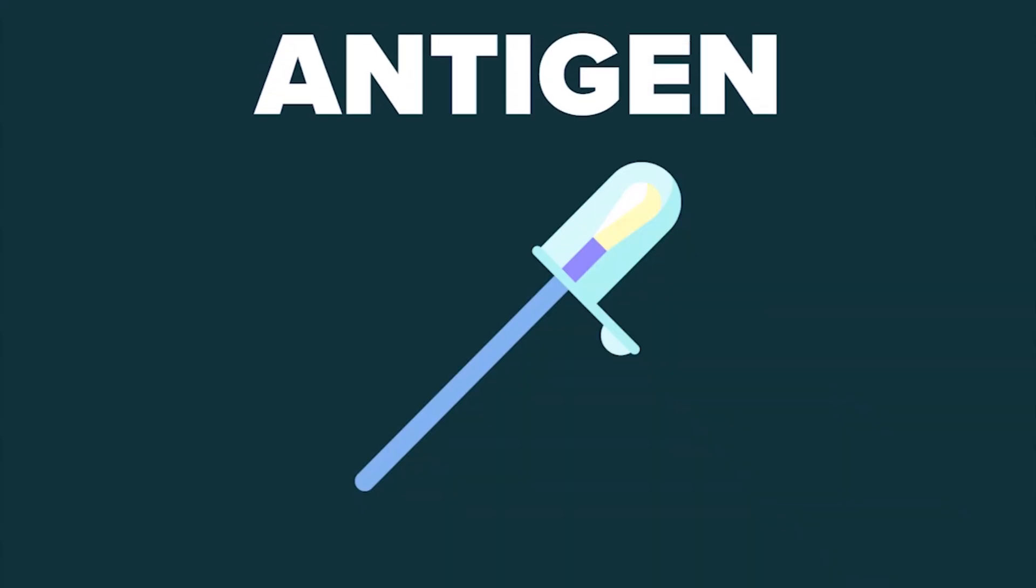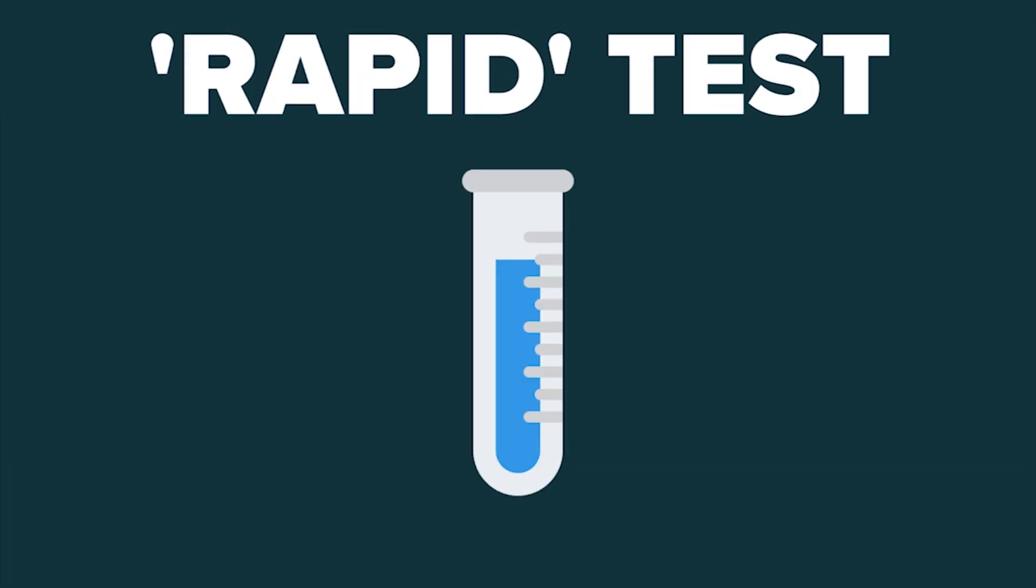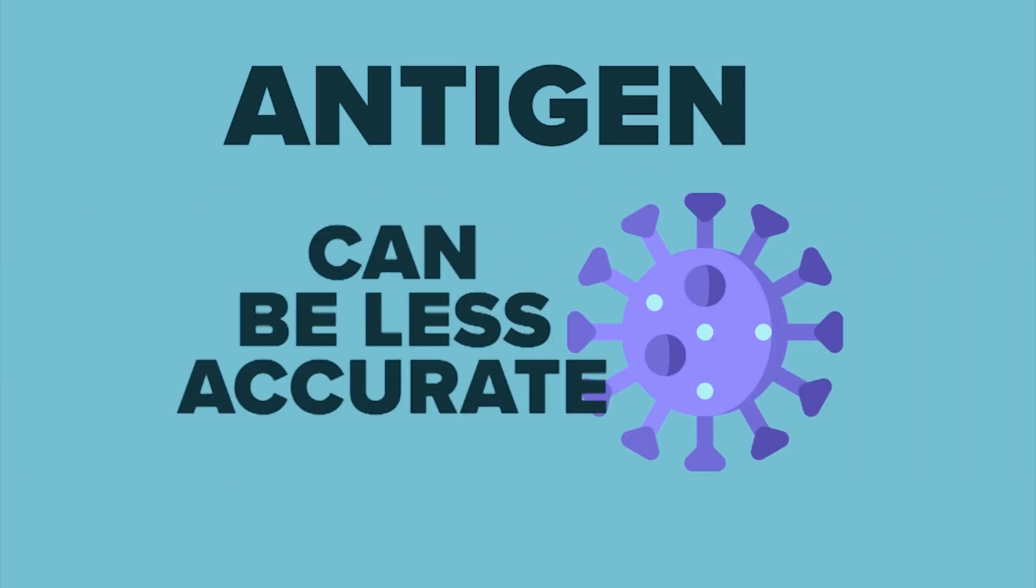The other test, the antigen test, detects proteins that are part of the virus. It's considered a rapid test. This test is faster and less expensive than the molecular test but can also be less accurate.